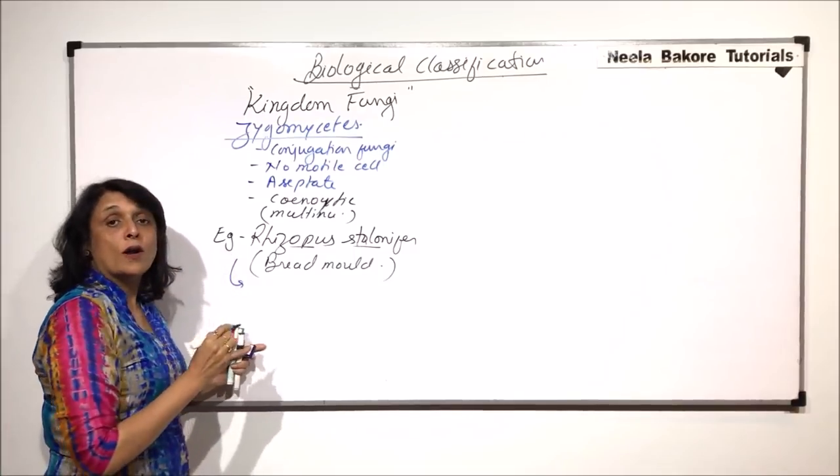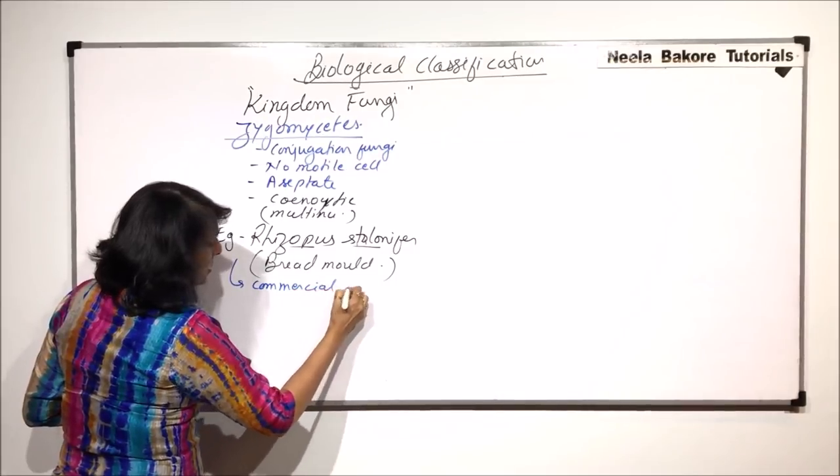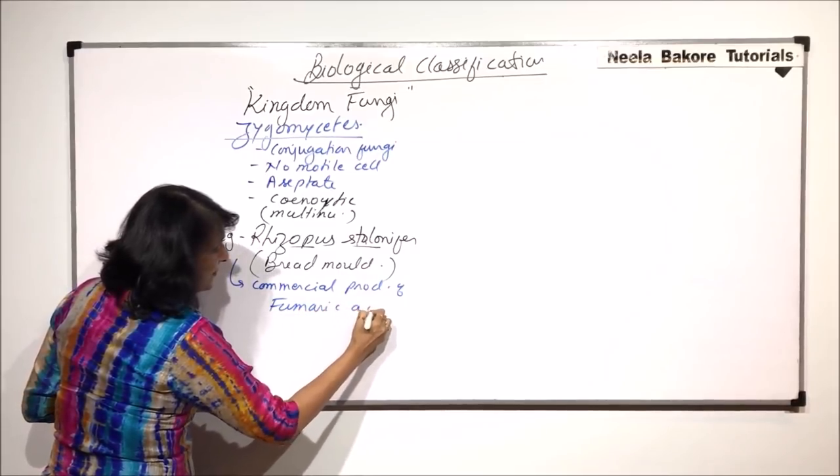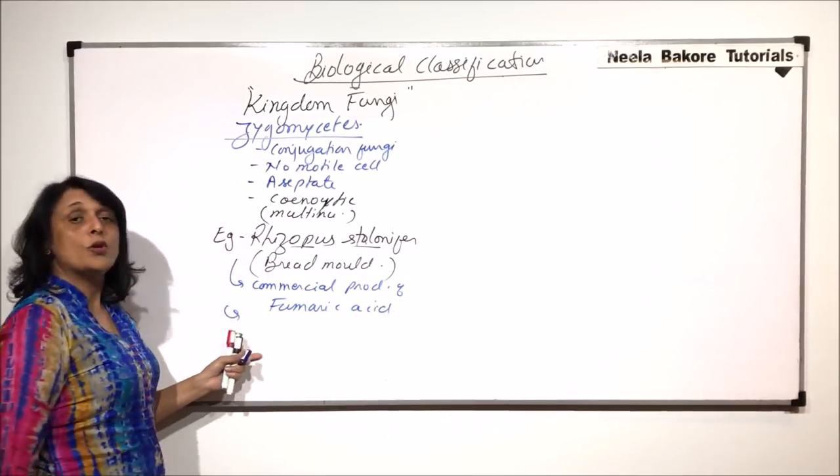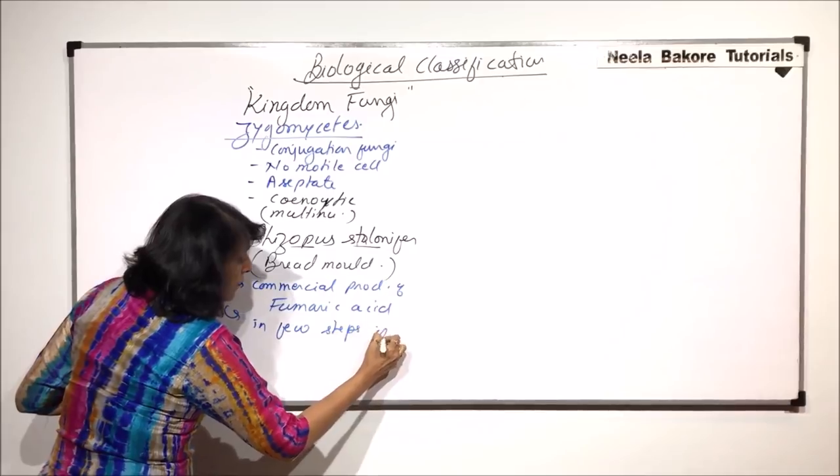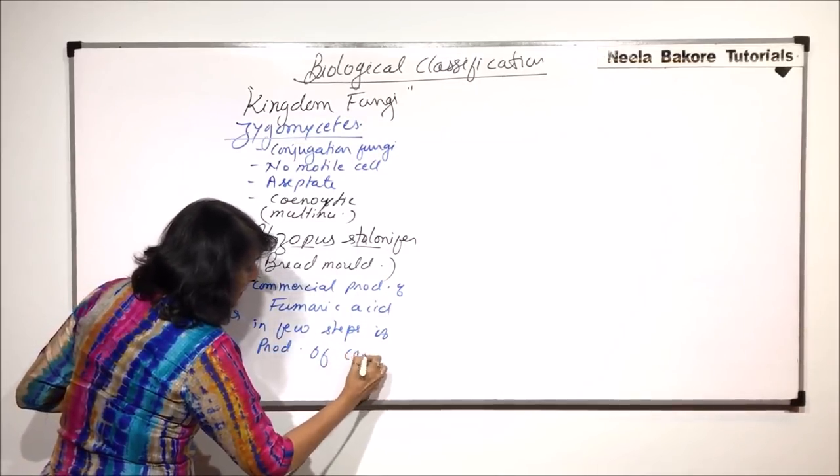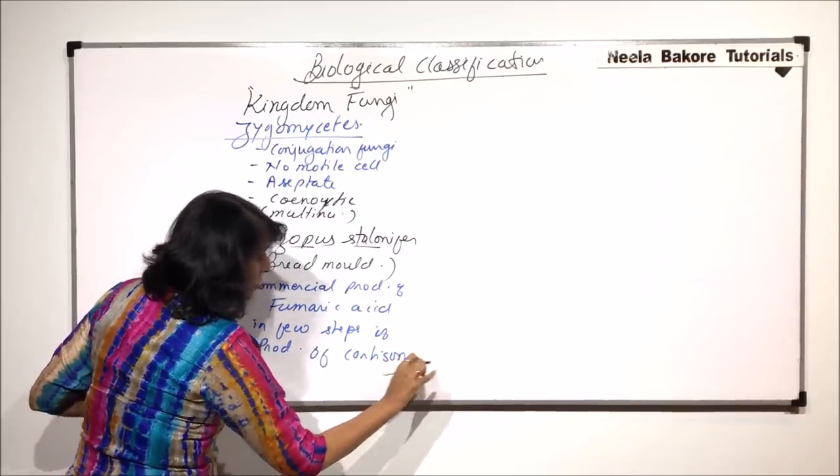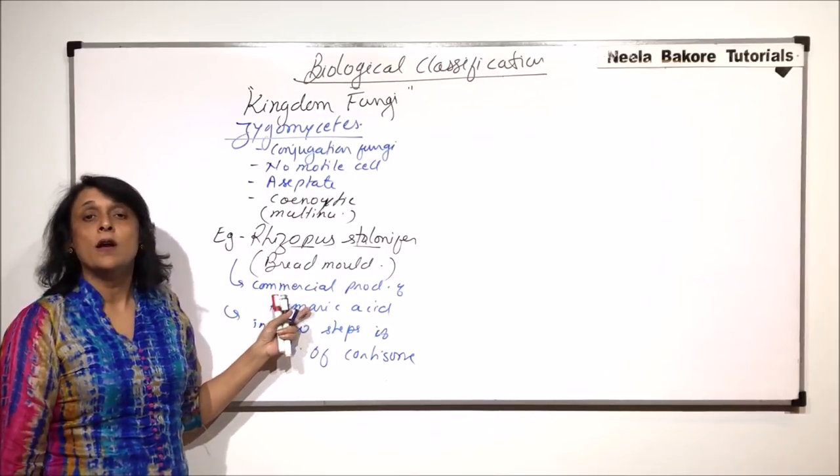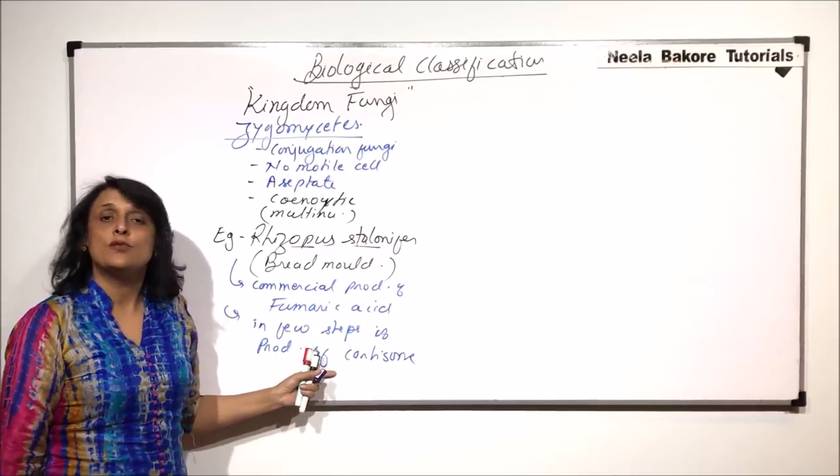It is used for commercial production of fumaric acid and it is also used in few steps of production of cortisone. Here it is used for only few steps and here it is used for the complete production of fumaric acid. This is the commercial use of Rhizopus.